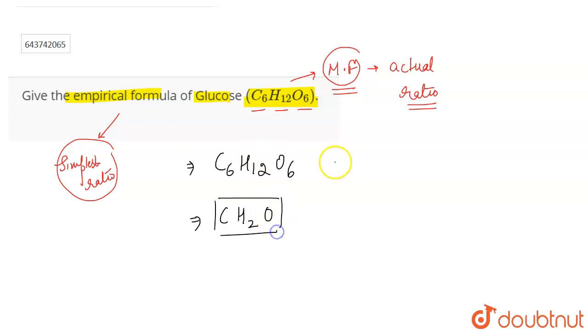Because the simplest ratio for this will become 1 is to 2 is to 1. Right now they are in the ratio of 6 is to 12 is to 6. So by dividing this by 6, you will get a simple ratio of 1 is to 2 is to 1 and this simple ratio is going to be the empirical formula which is CH2O and that's the correct answer for this question. That's all for the question.